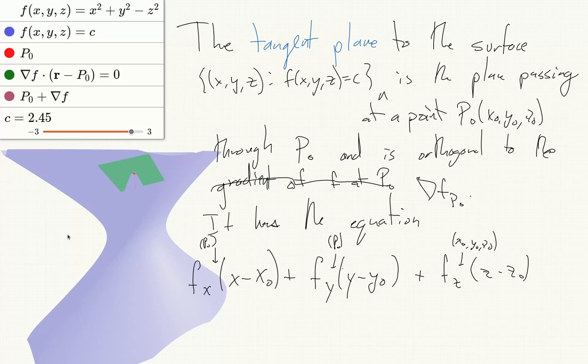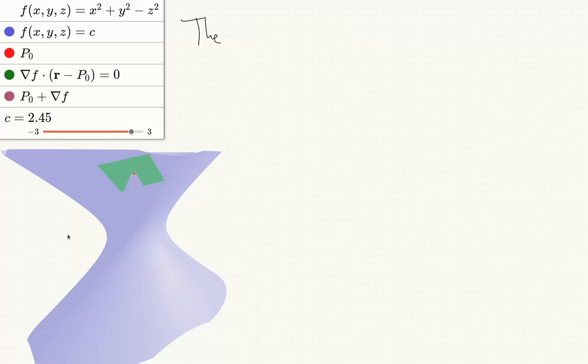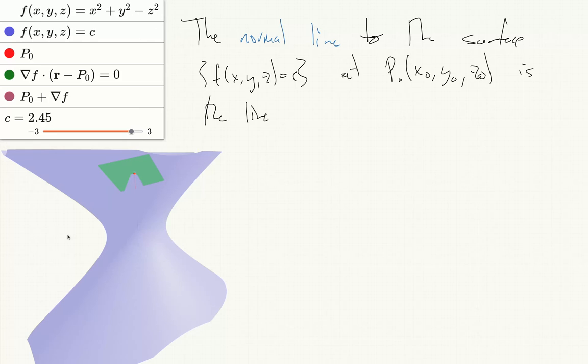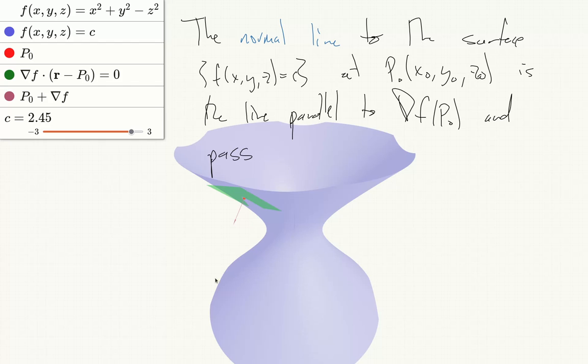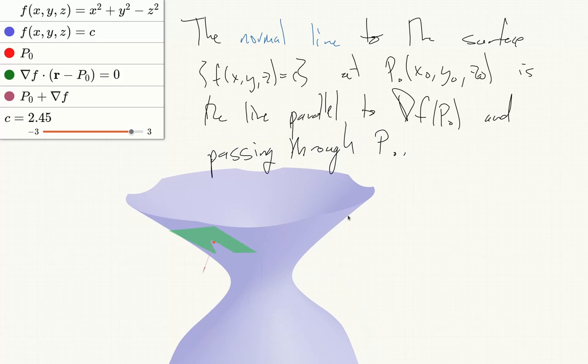The normal line to such a surface f(x,y,z) equals c at a point p0 (x0, y0, z0) will be the line which is parallel to the gradient and passing through p0.